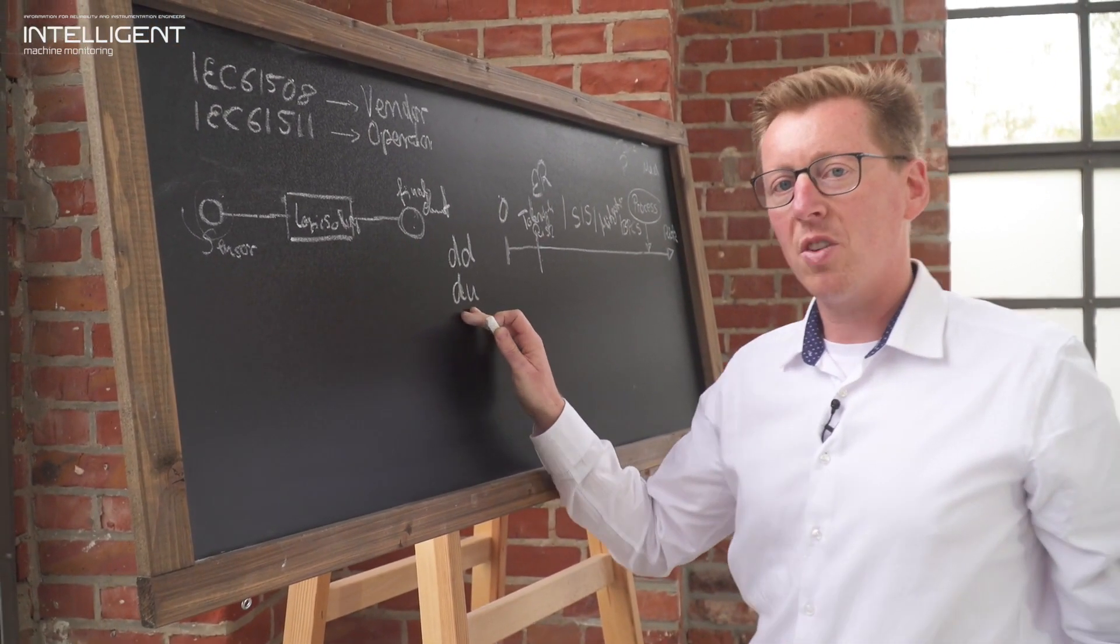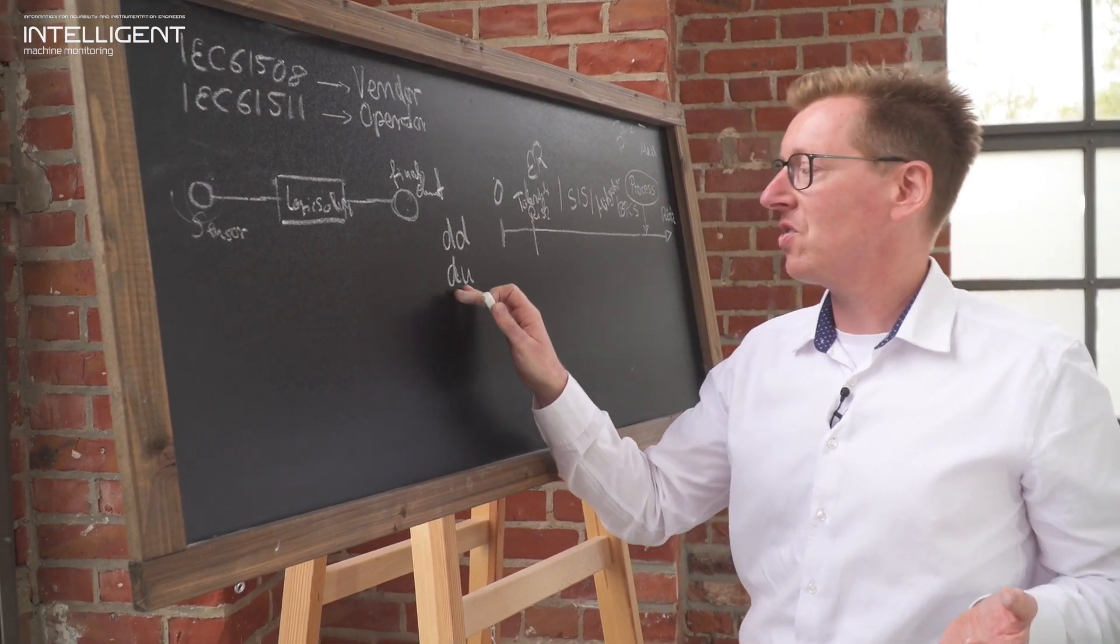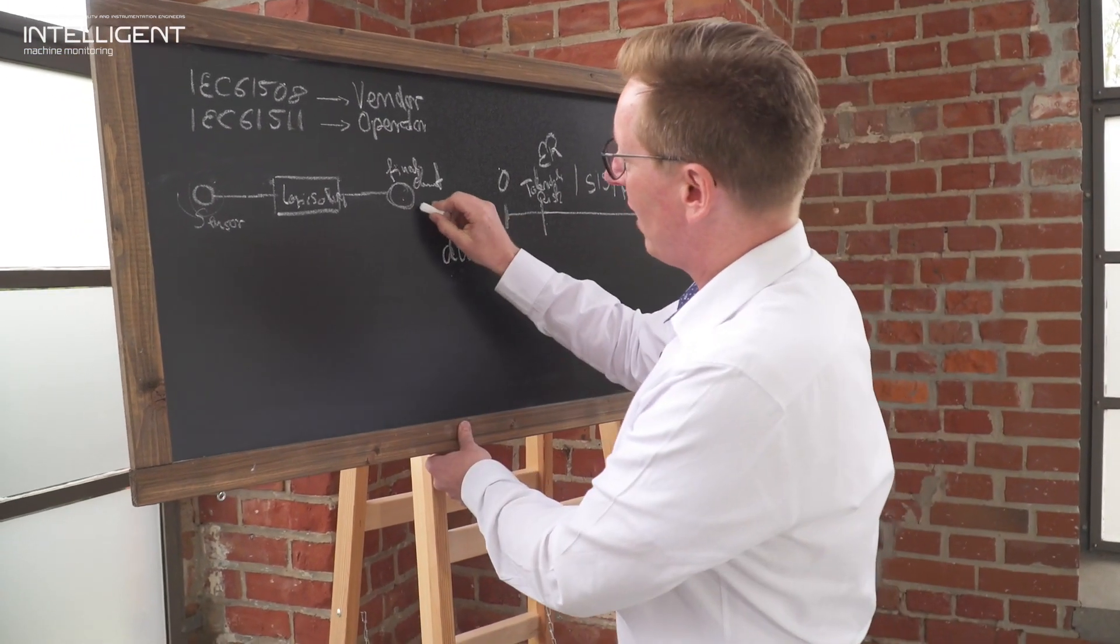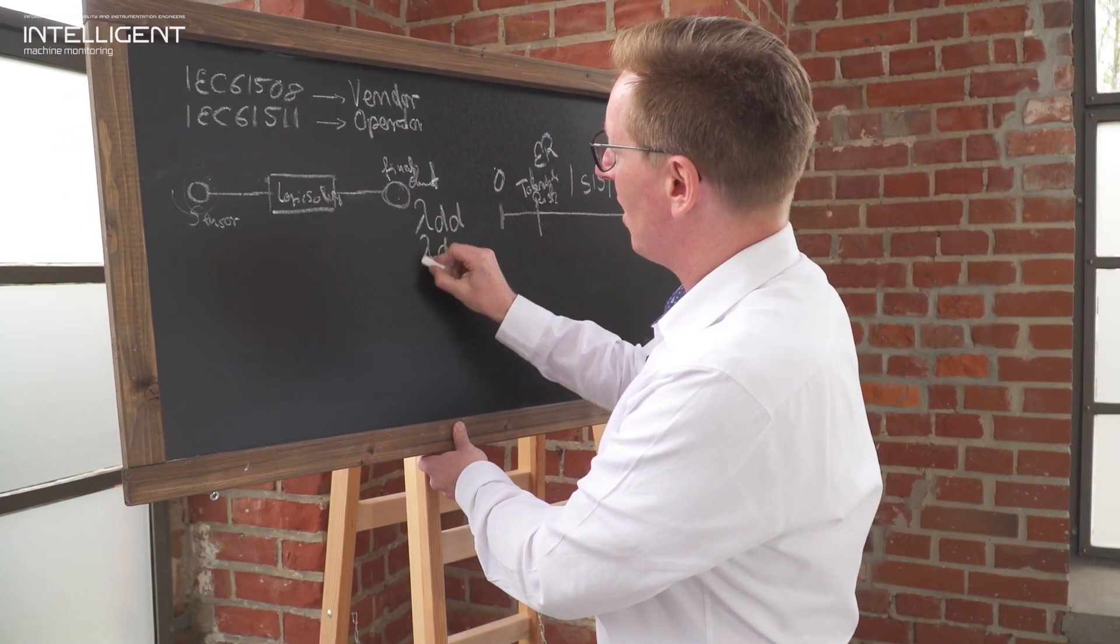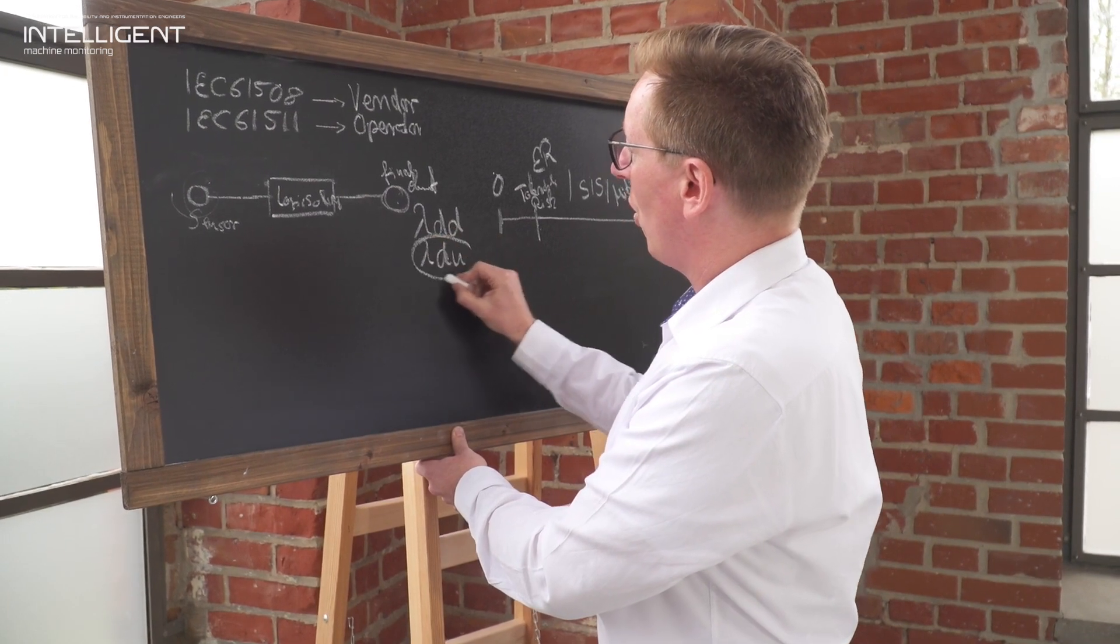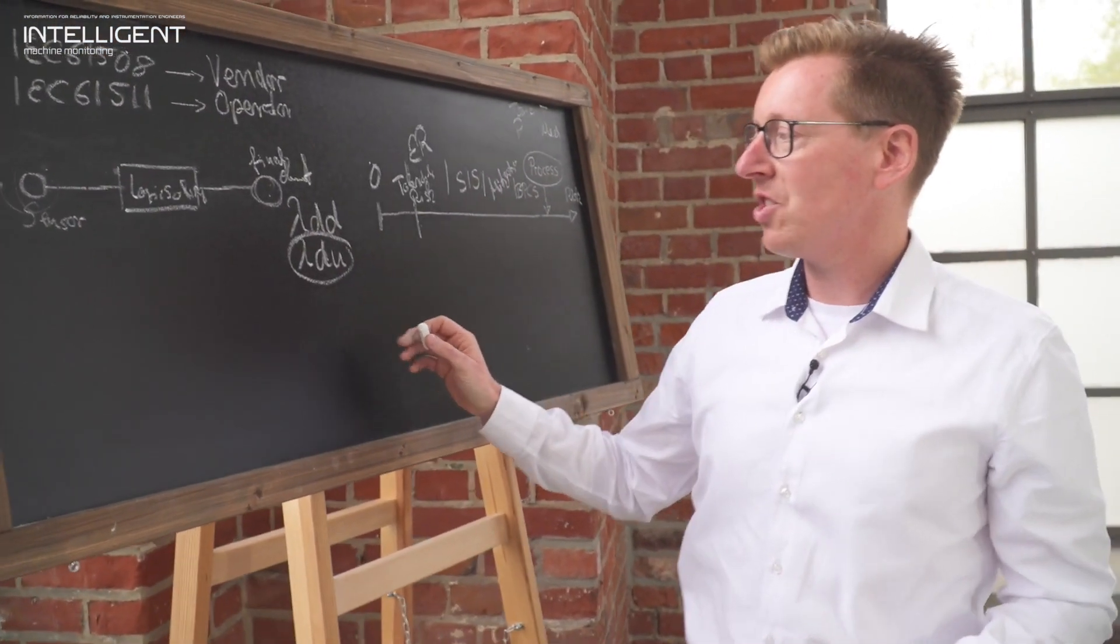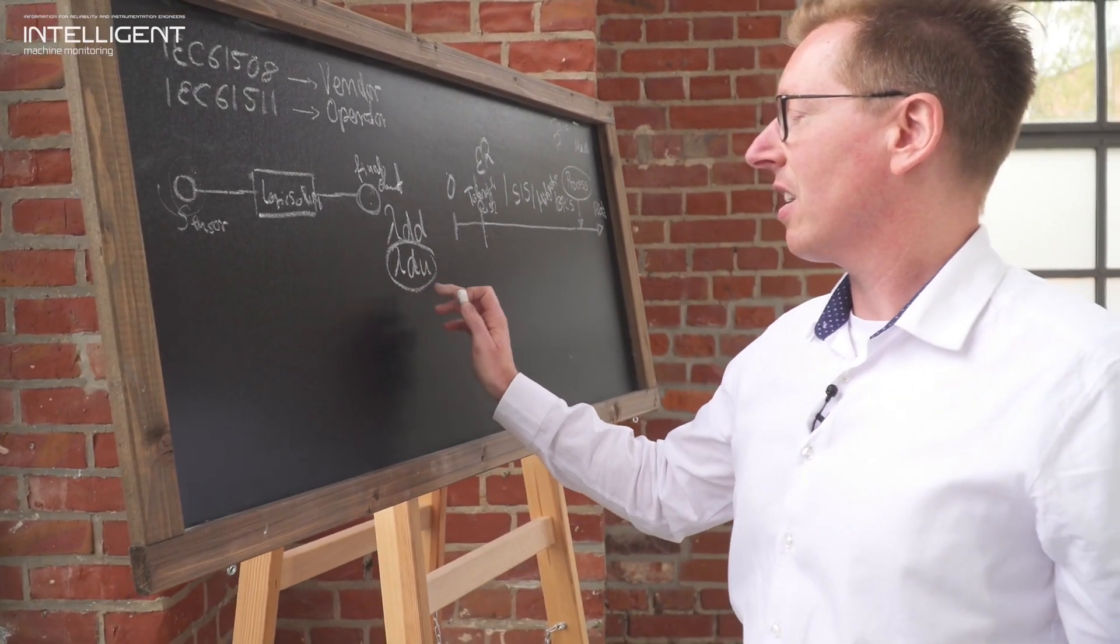But there is another problem and that is a dangerous and undetected failure mode. And those are the ones that really gonna bite you as an operator if these dangerous events remain undetected. There is the lambda DD and the lambda DU, and of all of these the lambda DU value is taken into consideration for the PFD calculation.